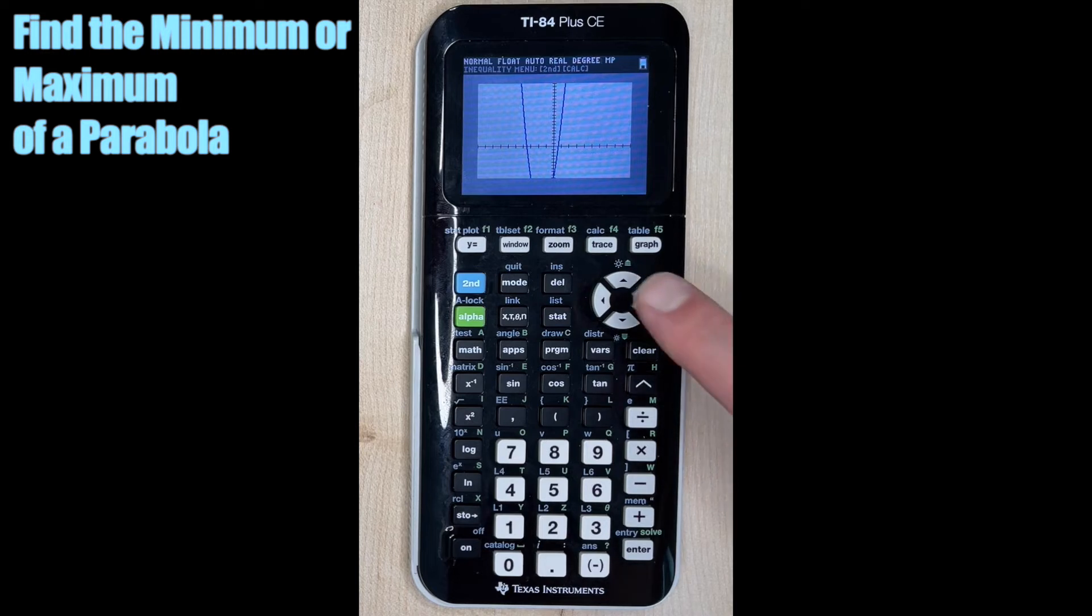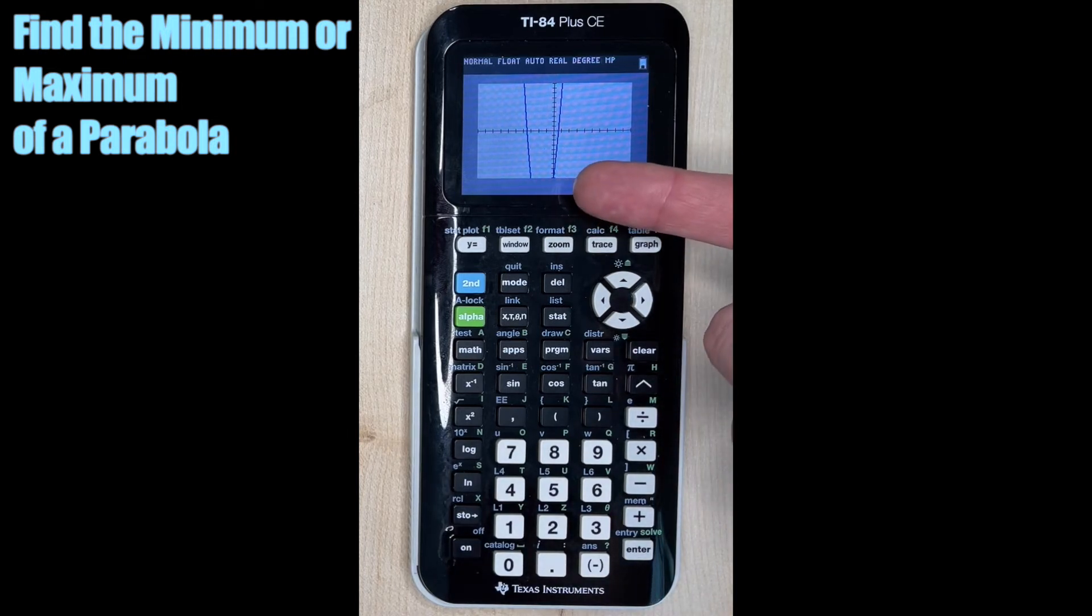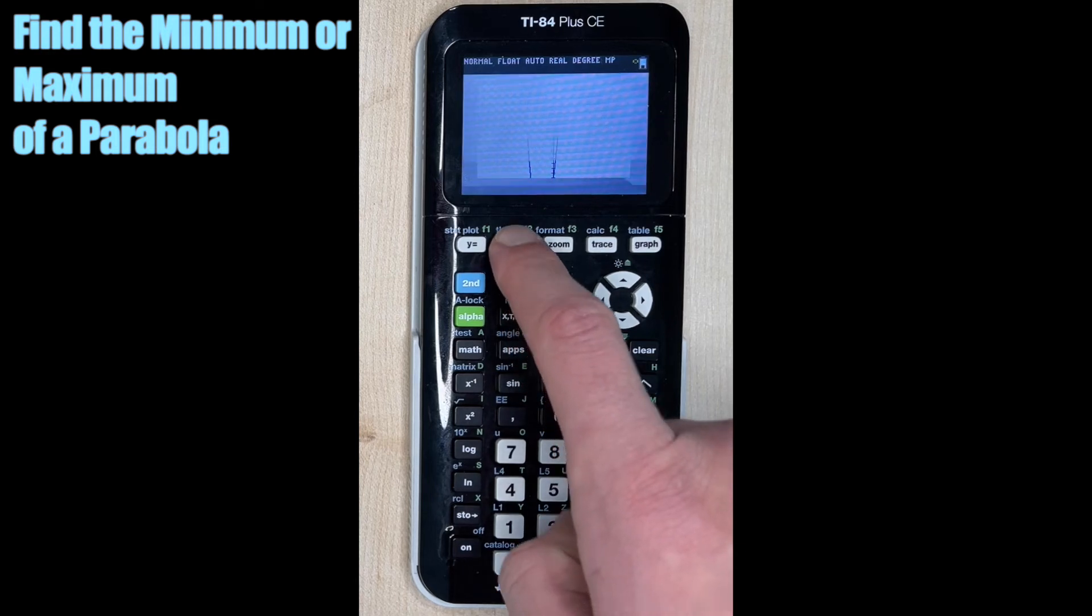Remember, there's always a little trick we can do: zoom six to get us back to our standard zoom. That's negative 10 to 10 on both x and y axis. Didn't really help us here because we still can't see the bottom of our parabola. So let's adjust the window.